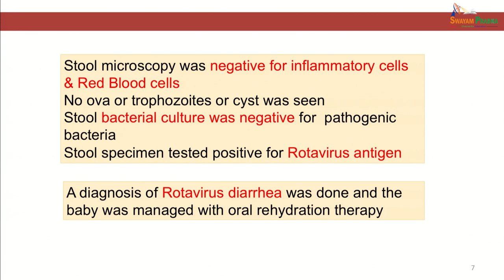Stool microscopy of this infant was negative for inflammatory cells. There were no red blood cells in the stool. There was no ova, trophozoite or cyst seen in the stool. Stool was negative for pathogenic bacteria on bacterial culture. However, the stool sample tested positive for rotavirus antigen. So, a diagnosis of rotavirus diarrhea was made and the baby was managed with oral rehydration therapy. This is how any case of viral diarrhea is presented to a pediatrician.